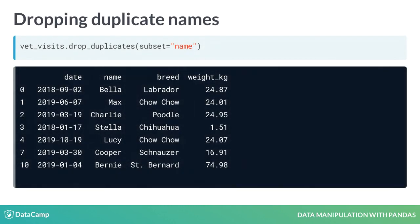Let's fix this by removing rows that contain a dog name already listed earlier in the dataset — in other words, we'll extract each dog by name from the dataset once. We can do this using the drop_duplicates method. It takes an argument, subset, which is the column we want to find our duplicates based on. In this case, we want all the unique names. Now we have a list of dogs where each one appears once.